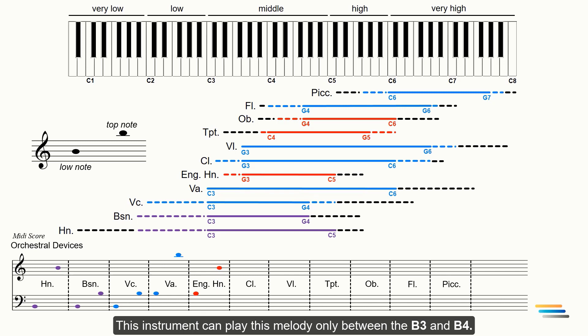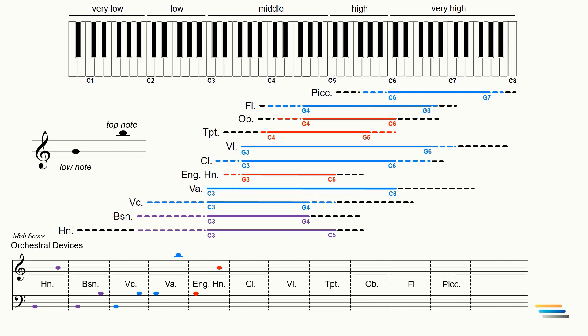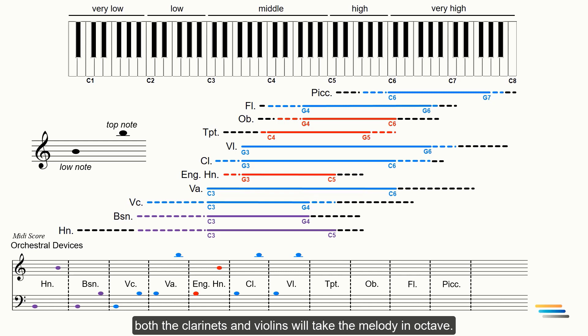The English horn can play this melody only between B3 and B4. As you observed, due to their huge range, both the clarinets and the violins will take the melody in octave. You can choose any.